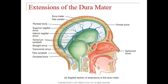It gets a little more complicated for the brain. The dura mater in your brain is really big and expansive — it has extensions. There are three major extensions of the dura mater: the falx cerebri, the tentorium cerebelli, and the falx cerebelli.